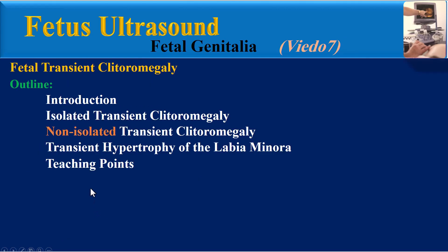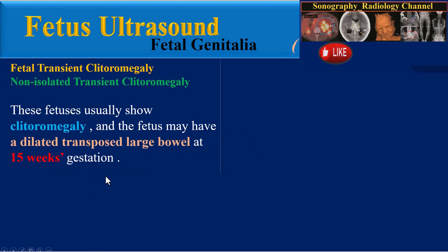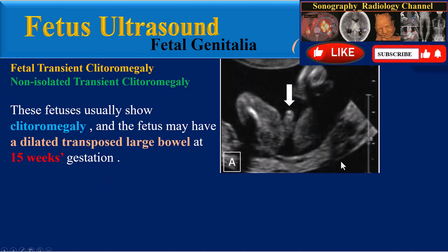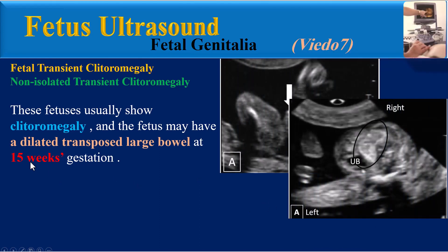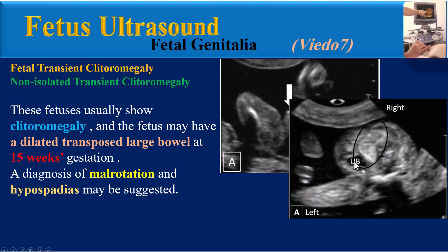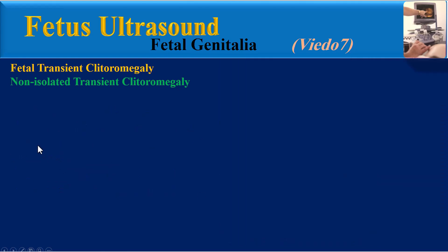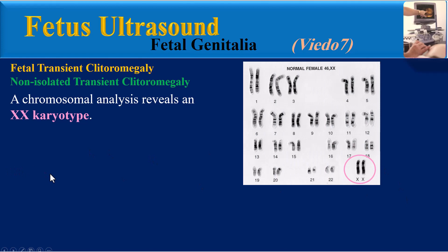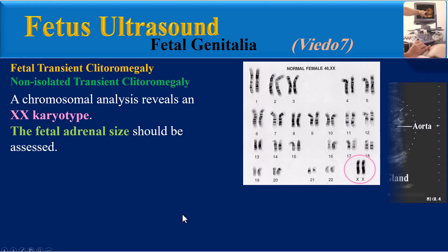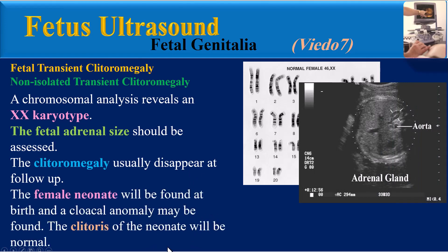This image from the same fetus at 22 weeks gestation, in a coronal plane, shows normal appearing female external genitalia with a normal clitoris. All these fetuses have normal genitalia after delivery. Regarding non-isolated transient clitoromegaly, these fetuses usually show clitoromegaly, and the fetus may have a dilated transverse large bowel. At 15 weeks gestation, a diagnosis of malrotation and hypospadias may be suggested. Chromosomal analysis reveals an XX karyotype.